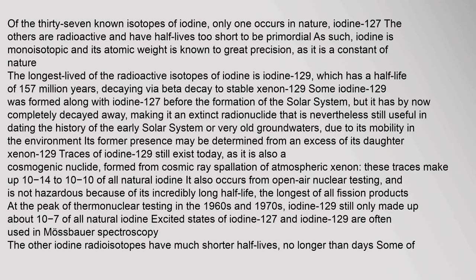Isotopes: Of the 37 known isotopes of iodine, only one occurs in nature — iodine-127. The others are radioactive and have half-lives too short to be primordial. As such, iodine is monoisotopic and its atomic weight is known to great precision, as it is a constant of nature. The longest-lived of the radioactive isotopes of iodine is iodine-129, which has a half-life of 15.7 million years.